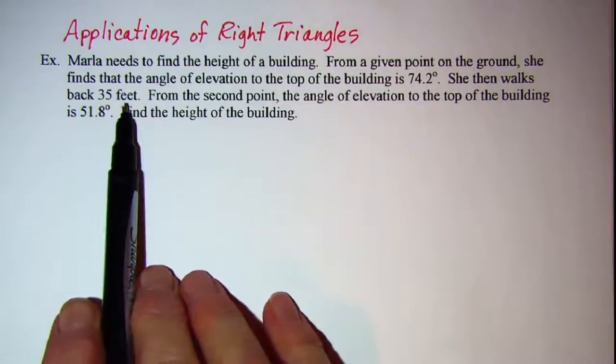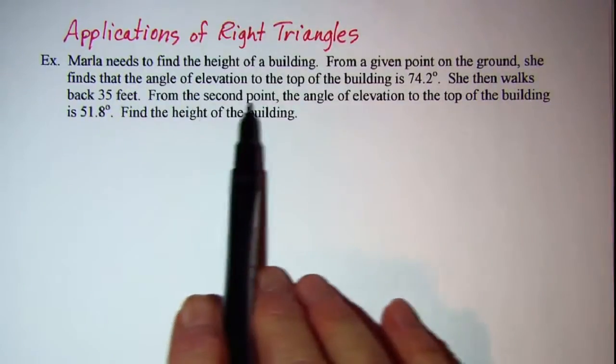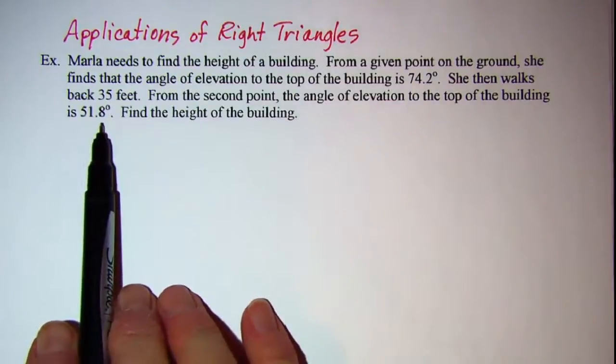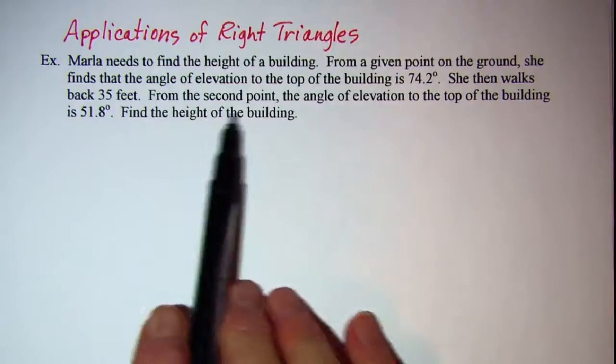She then walks back 35 feet. From the second point, the angle of elevation to the top of the building is 51.8 degrees. Find the height of the building.